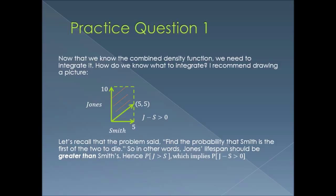I have J minus S is greater than zero — let me explain where that comes from. The problem asks for the probability that Smith is the first to die, meaning Jones's lifespan should be greater than Smith's. So we're looking for P(J > S), which implies J minus S > 0. Graphing that gives the green line in the middle of the graph pointing to (5, 5).